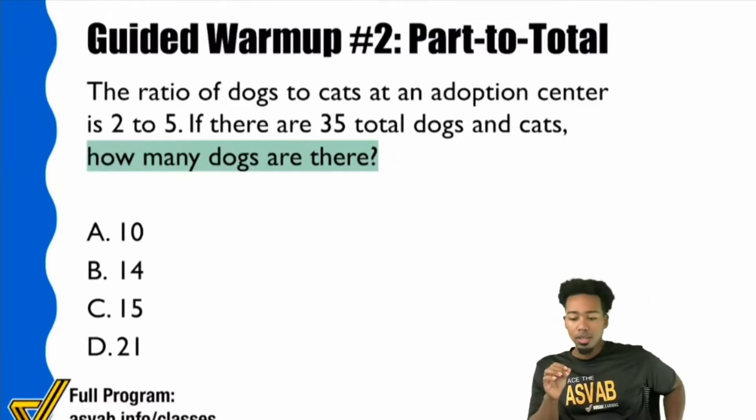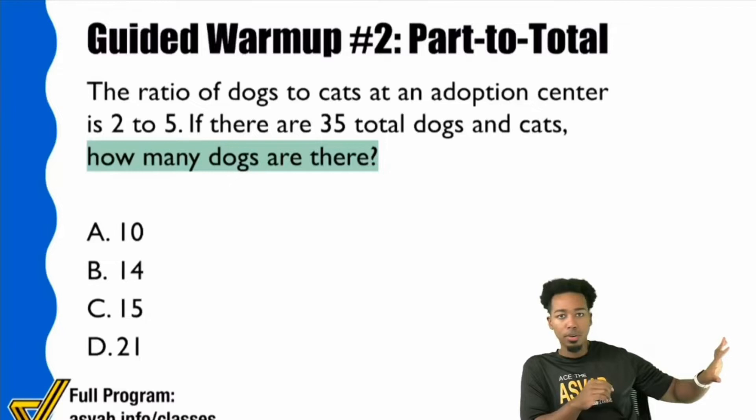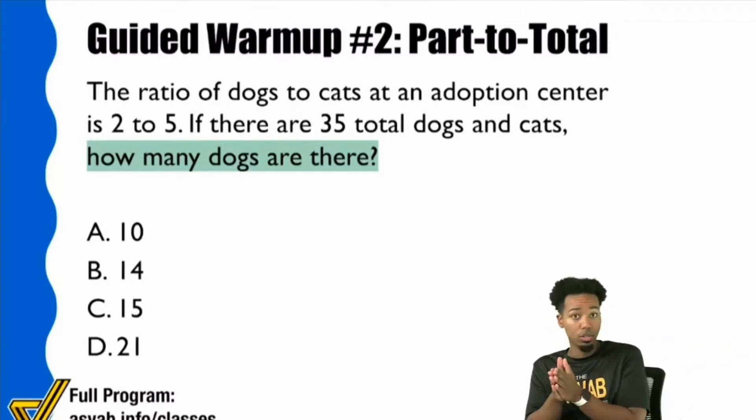Like your skill level does not matter when it comes to identifying the question. Everyone should be able to do that. Does that make sense? Like how you get there? Different story, right? Different story entirely. But knowing what you're looking for, that should be no question for anybody. That is easy for everybody. That should be easy because all you have to do is read the sentence.